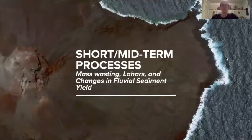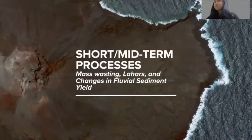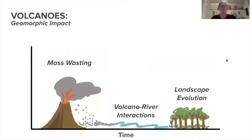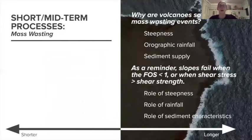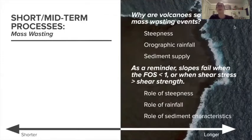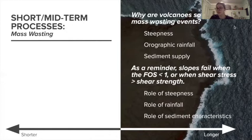We're going to talk first about shorter and mid-term processes, beginning with mass wasting, which generally occurs on the shortest timescales. Volcanoes are particularly prone to mass wasting events for three main reasons: one, because of their steepness; two, because of orographic rainfall and climate effects; and three, because of an increased sediment supply. Volcanoes, especially stratovolcanoes, can be pretty steep. Stratovolcanoes are composite landforms from multiple eruptions occurring over time, and the high silica content of their lava flows makes them viscous and resistant to flow, which can make the volcano walls quite steep.